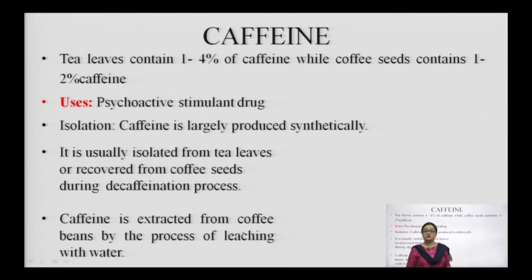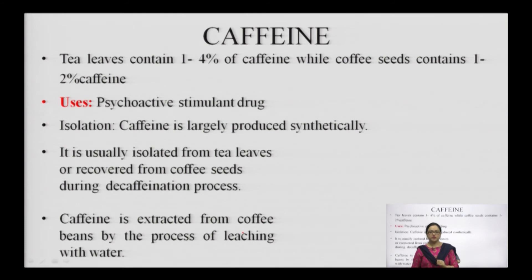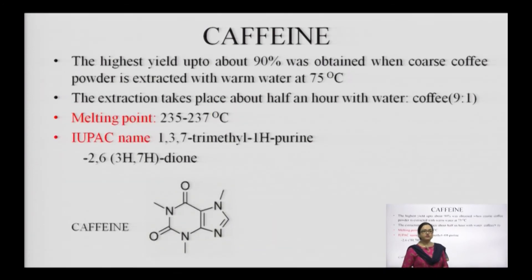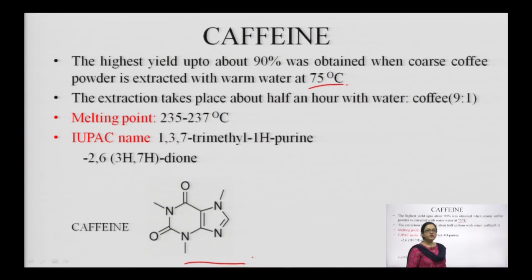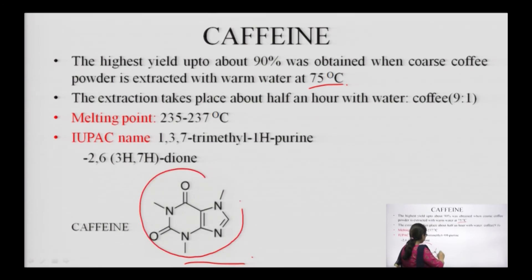Regarding isolation: caffeine is largely produced synthetically. It is usually isolated from tea leaves or recovered from coffee seeds via the decaffeination process — extracting caffeine out of the coffee beans. Caffeine is extracted from coffee beans by leaching with water. The highest yield, up to 90%, is obtained when coarse coffee powder is extracted with warm water at 75°C. Extraction takes about half an hour with water and coffee in the ratio 9:1. The melting point of caffeine is 235–237°C and it contains the purine moiety.